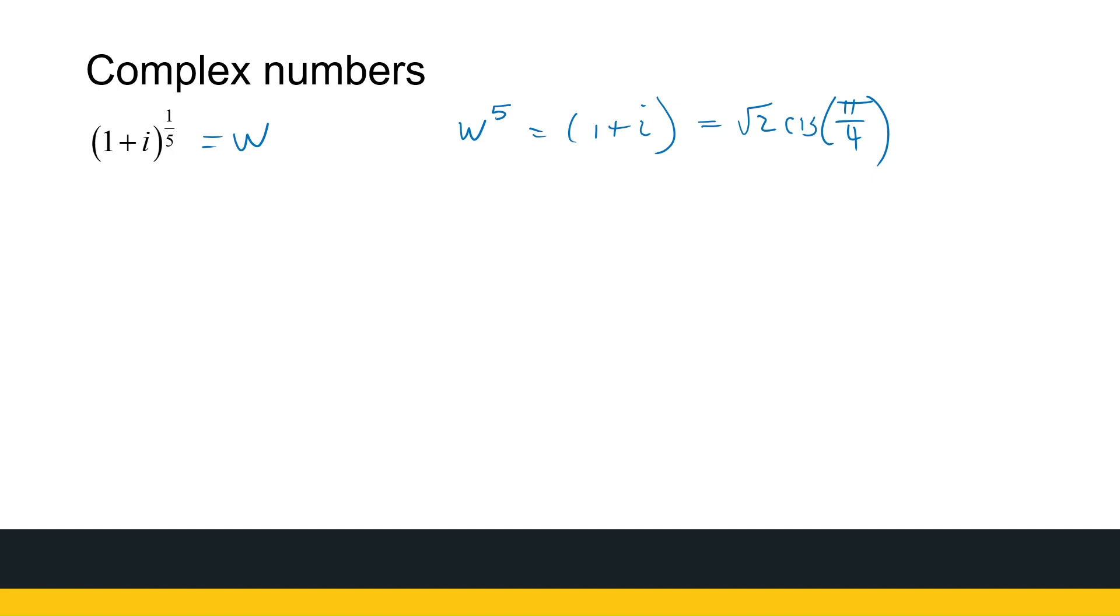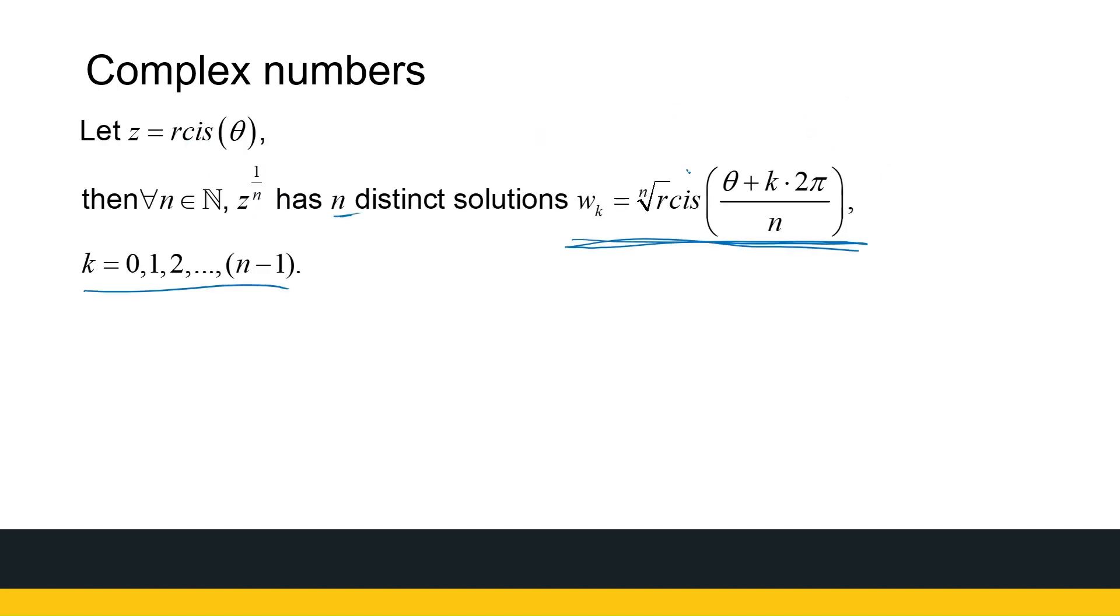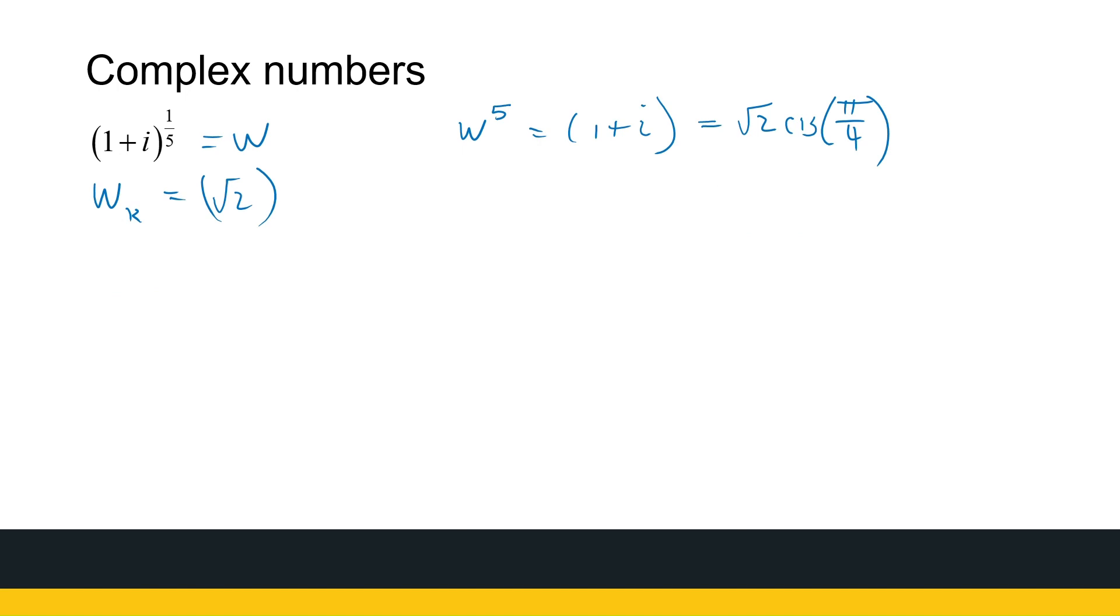So let's look at our possible solutions. My formula tells me w_k is my r value to the kth root. I've already got a root there, another root gets messy, so I'm just going to say 1 over 5. Cis: my angle is pi over 4, but now it's pi over 4 plus k times 2 pi over this n value, which is 5. And my k values go from 0, 1, 2, 3, and 4, and then it says stop there.